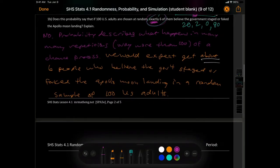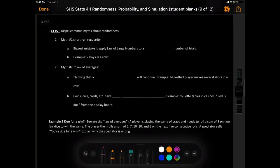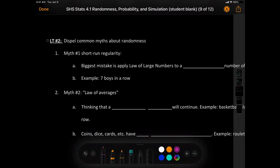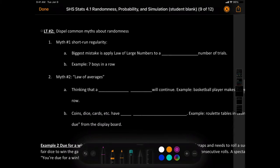So that's a visual of kind of like where we're going, and a definition of probability. Let's move on to the next learning target here. Which is to dispel common myths or lies about randomness. Myth number one. Short-run regularity. The biggest mistake is to apply the law of numbers to a small number of trials.